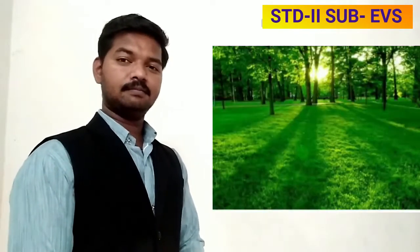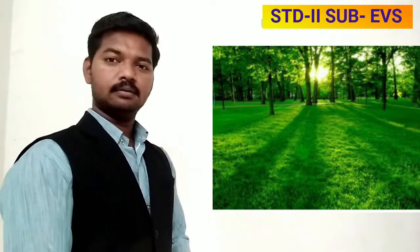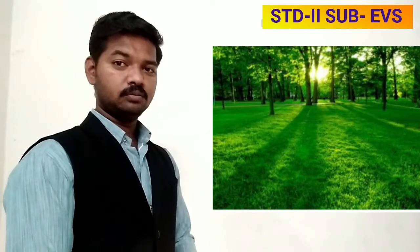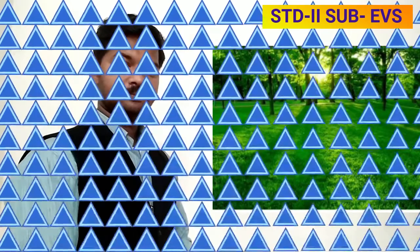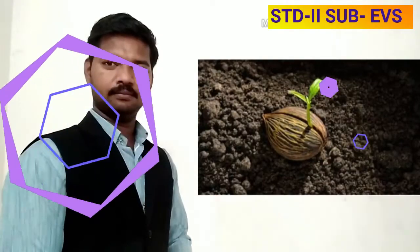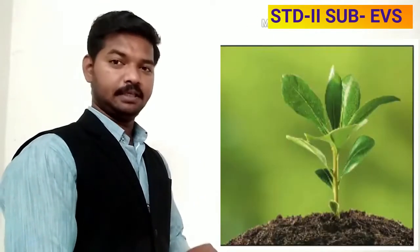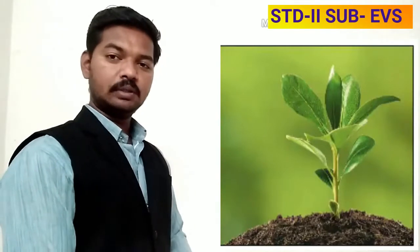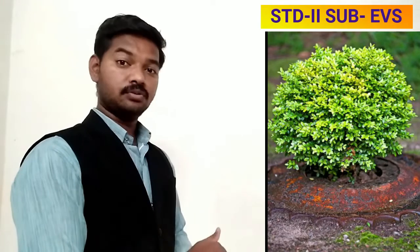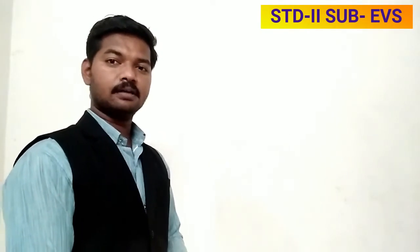Rainy season has started — in the rainy season we will see greenery everywhere and new plants growing from the ground. Do you know where these new plants come from? Is there any magic behind it? No — plants grow from seeds. Seeds of a plant grow into saplings, and saplings grow into plants of different sizes and shapes, such as grass, shrubs, and trees.